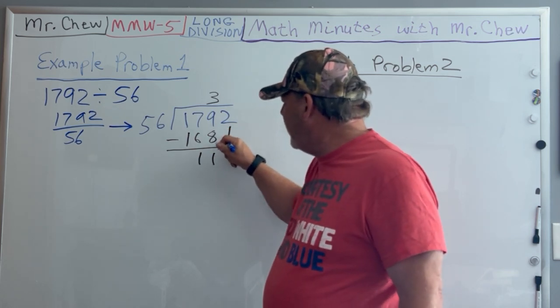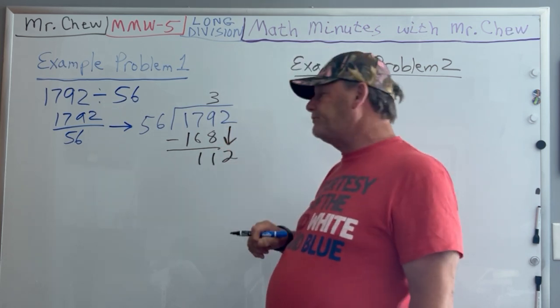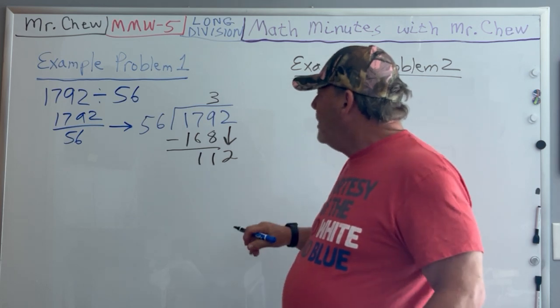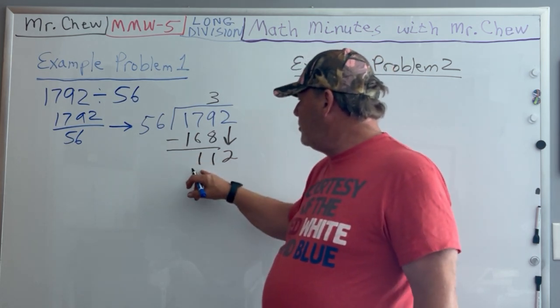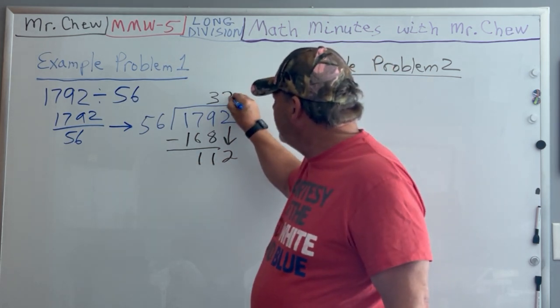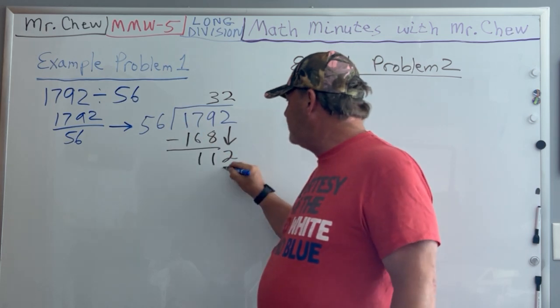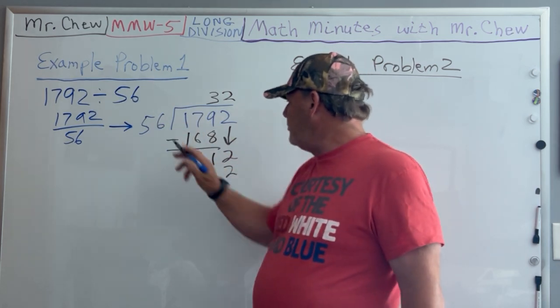Then I carry down this two. Next, I see how many times will 56 go into 112. It will go two times. Two times six is 12, carry the one. Two times five is 10 plus one is 11.